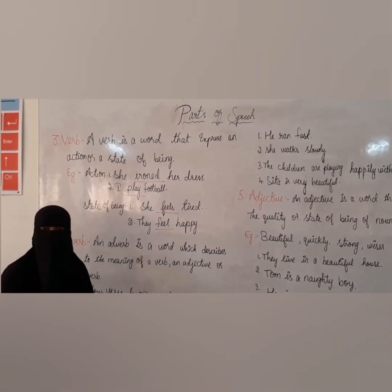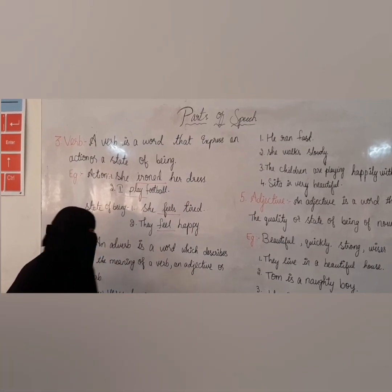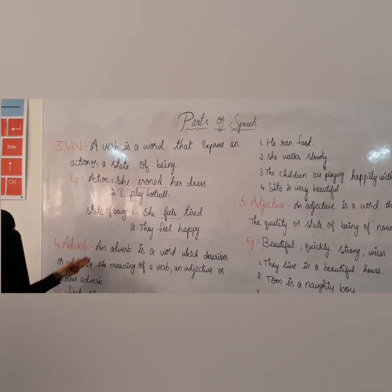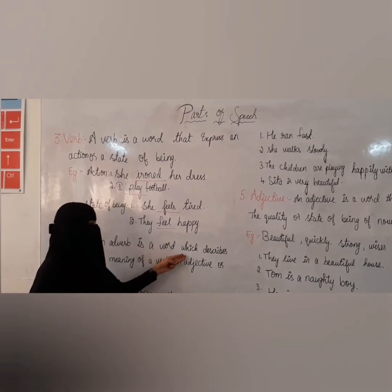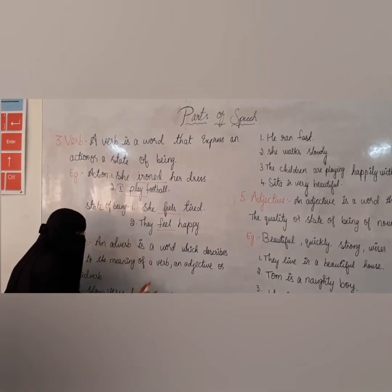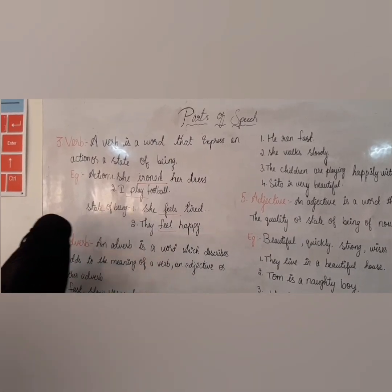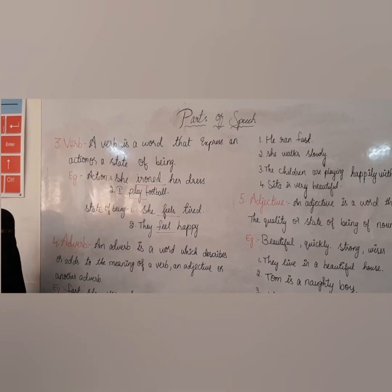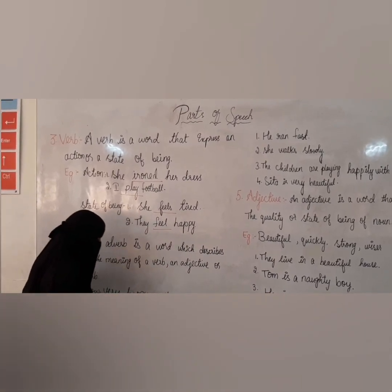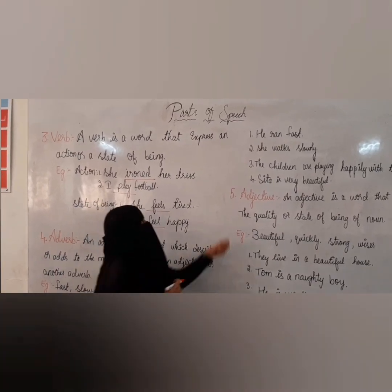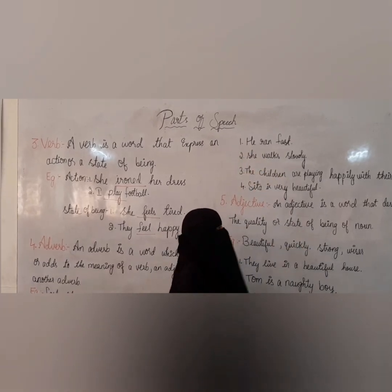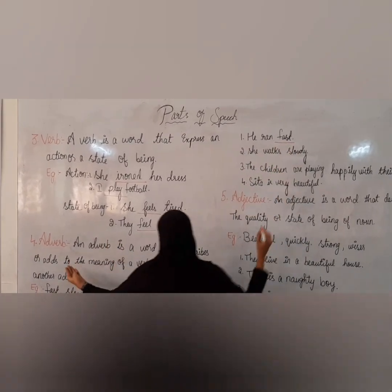Now let's move on to part of speech number four — adverb. What is an adverb? An adverb is a word which describes or adds to the meaning of a verb, an adjective, or another adverb. Some examples: fast, slow, very, happy, well, and so on. Here, in this example: He ran fast. Fast is an adverb.